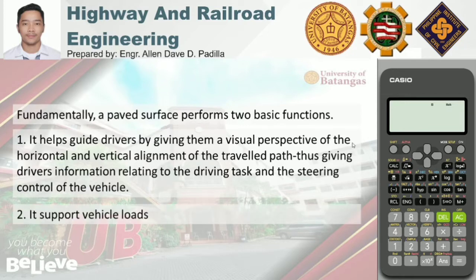The second function is that it supports vehicle loads. The primary function of pavement is to transmit loads to the sub-base and underlying soils. The load induced by moving vehicles is transmitted to the pavement, and then the pavement transmits it to the subgrade at a level that is acceptable and bearable depending upon the engineering property of the subgrade.